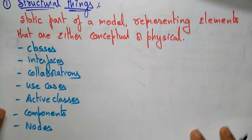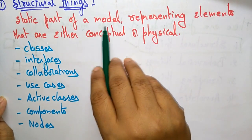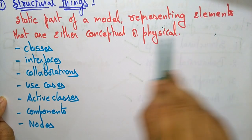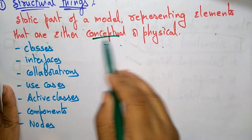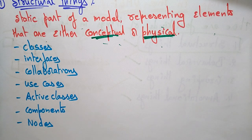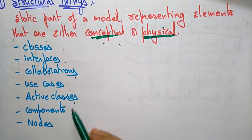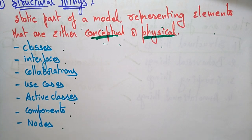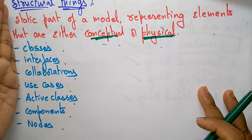A structural thing is a static part of a model representing elements and their conceptual or physical aspects. It is just representing elements that are either conceptual or physical. The different types of structural things are classes, interfaces, collaborations, use cases, active classes, components, and nodes. These all come under the static part — they are not dynamic. That is why we call them structural things.